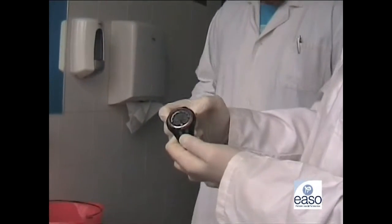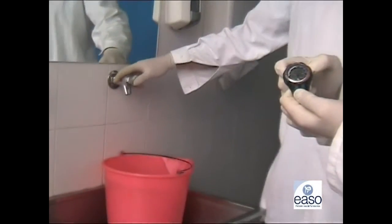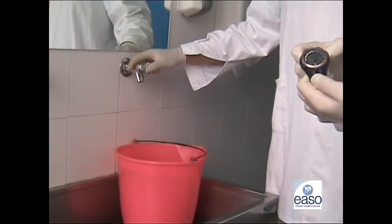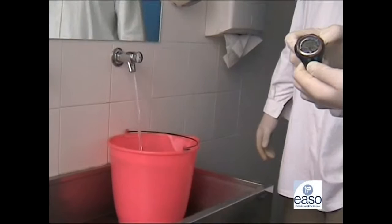Empezaremos por los grifos de pulsador. Primero colocaremos el cubo de abajo del grifo. Después pulsaremos el botón hasta el fondo al tiempo que ponemos en marcha el cronómetro. Cuando acabe el vertido de agua, pararemos el cronómetro.